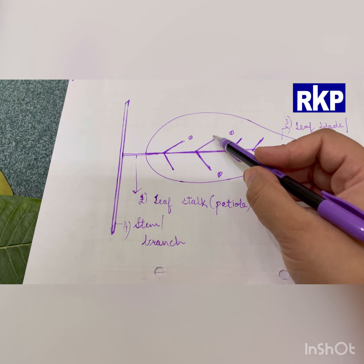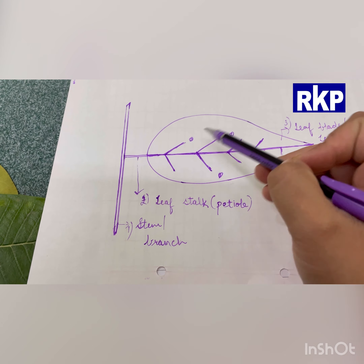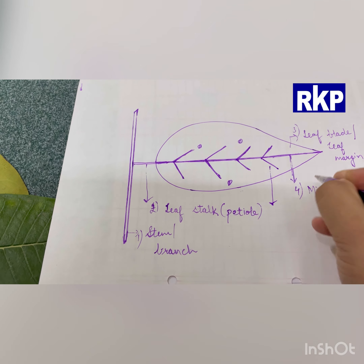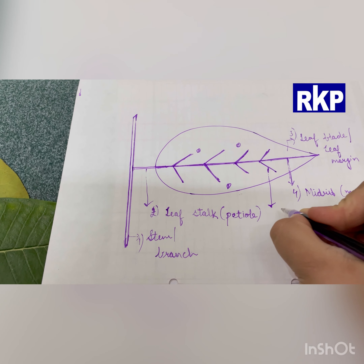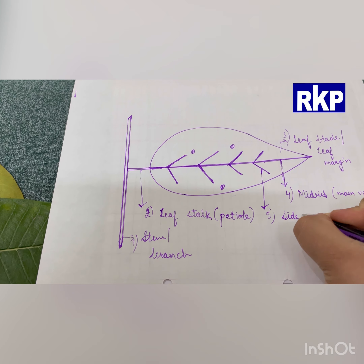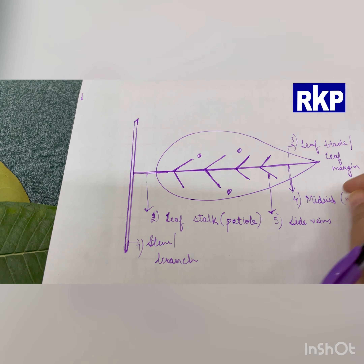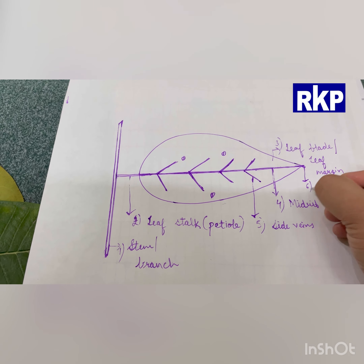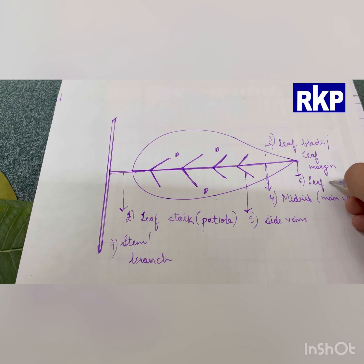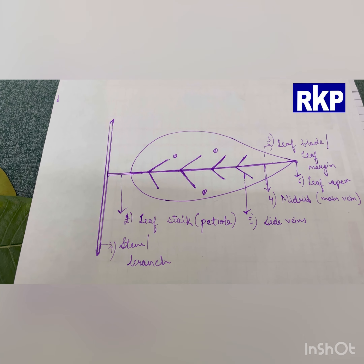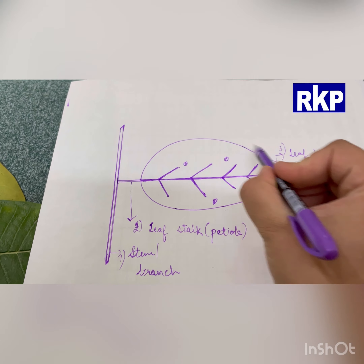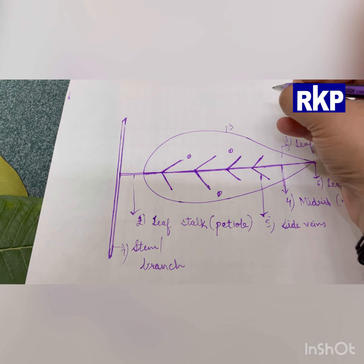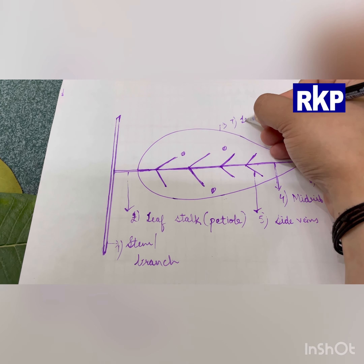The pipeline structures running through the sides of the main vein are known as side veins. The tip of the leaf is known as the leaf apex. The boundary of the leaf is known as the leaf margin.